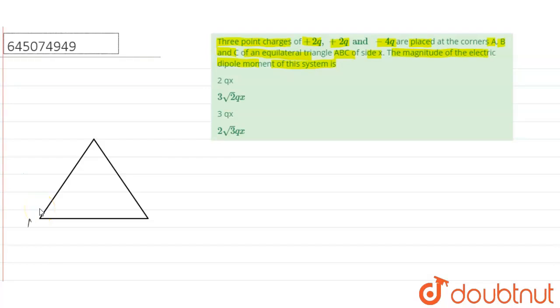Now this is the triangle A, B and C and charges plus 2q, plus 2q and minus 4q.